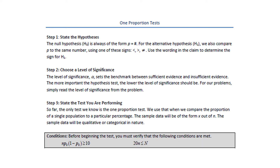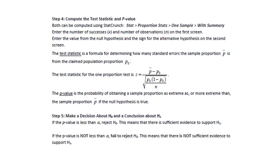There are five steps for performing a one proportion test. First, state the hypotheses. Second, choose a level of significance. Third, state the test you're performing, as long as we know it meets the right conditions. Step 4, compute the test statistic and the p-value. And finally, step 5, make a decision about H0 and a conclusion about H1.